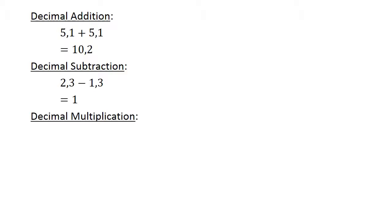Decimal multiplication: 0.5 times 0.06 equals 0.030, or just 0.03.